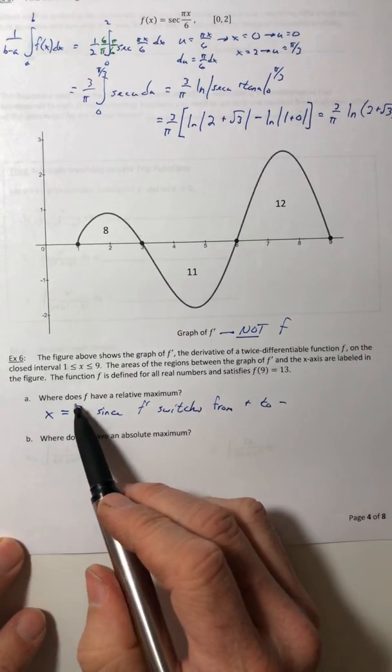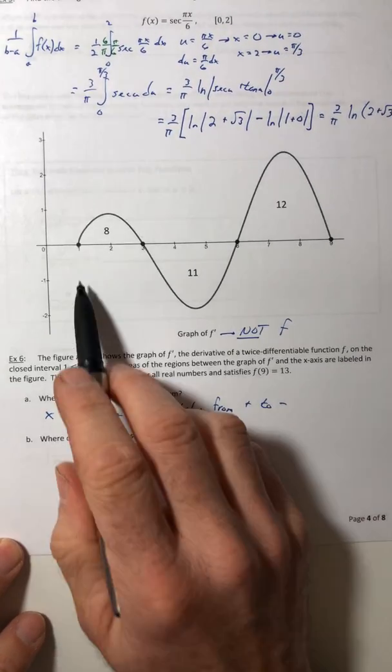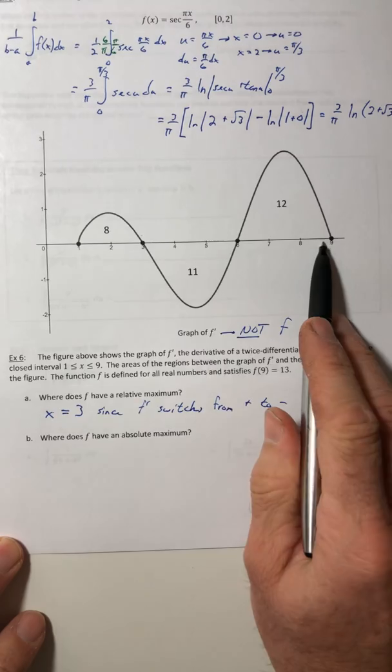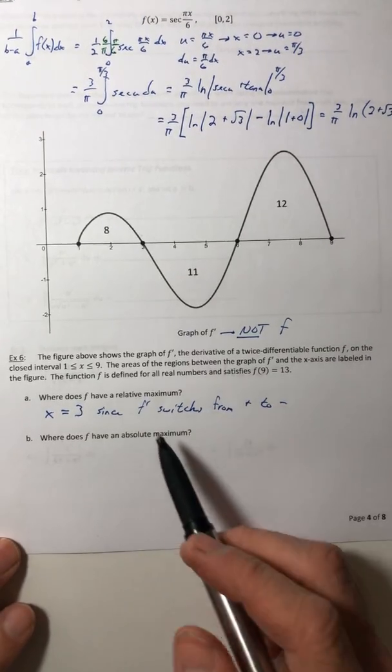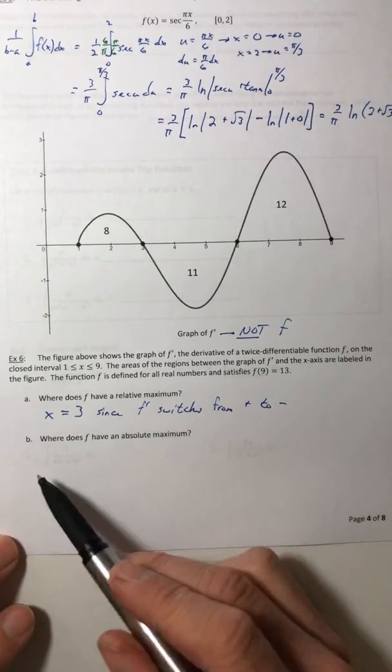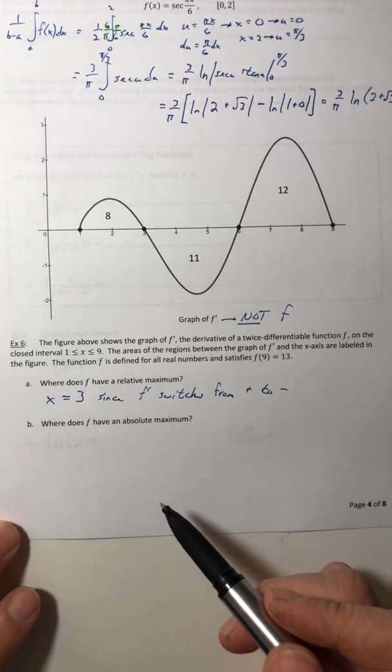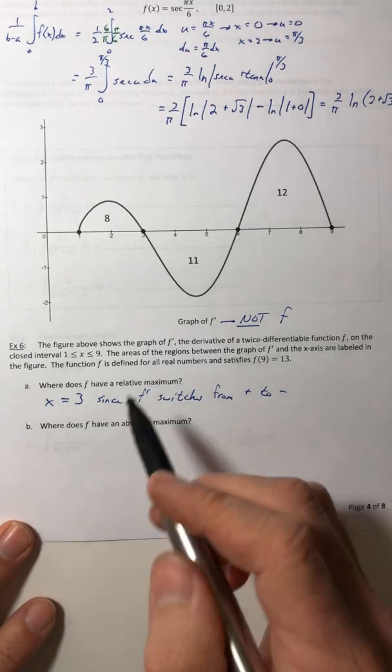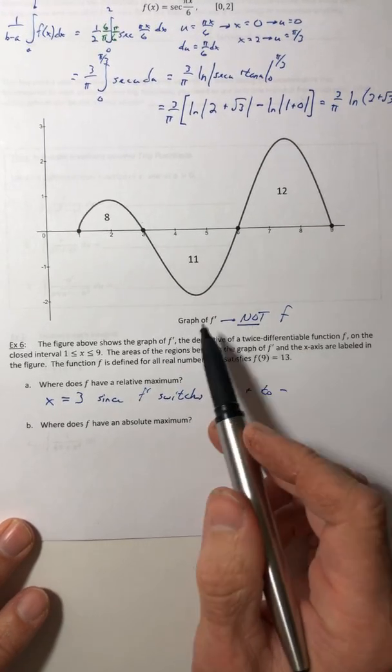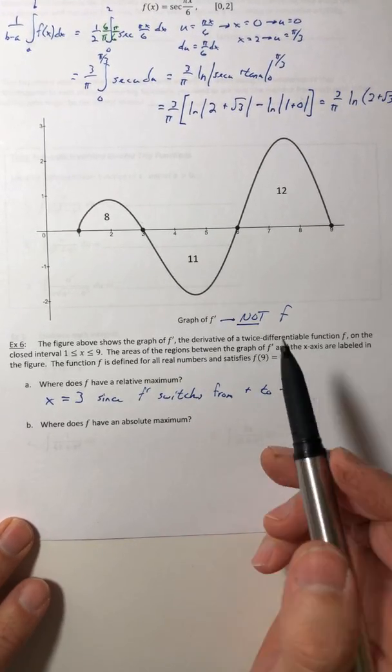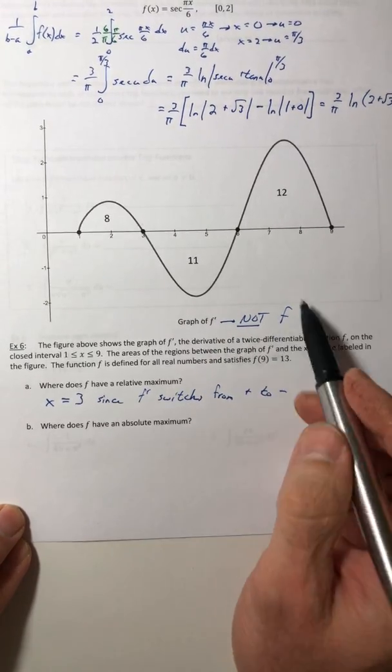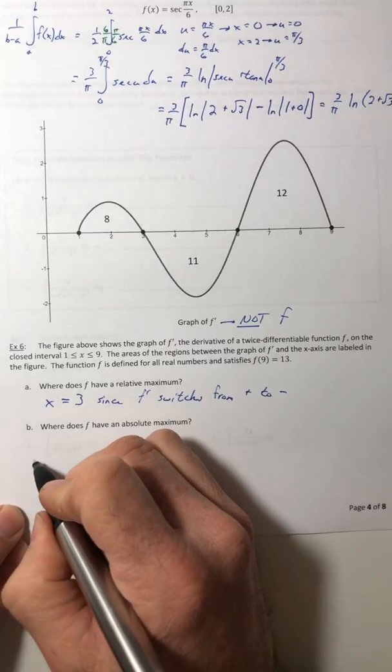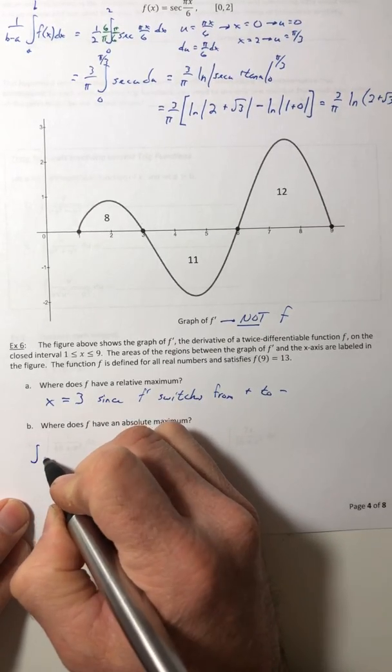So the only critical number I have to use is 3, but I also have to plug in the 1 and plug in the 9, because those are the endpoints of the interval. And then I just have to figure out, once I plug them in, which one is the biggest. Well I don't have a function, I have a derivative, but if I integrate it that would give me the function. So I'm going to integrate f prime.